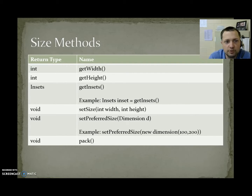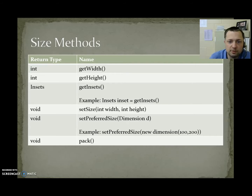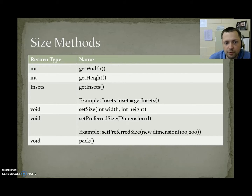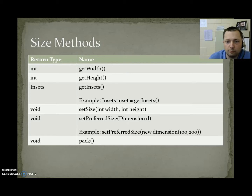Size methods: getWidth tells you how wide the frame is, getHeight tells you how tall it is. getInsets — used as: Insets insets = getInsets() — is used to find out the framing, like the frame edges. We can use getInsets to figure out how many pixels wide or tall those bordering components are.